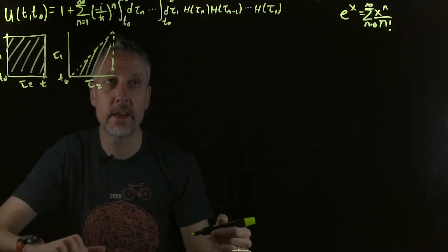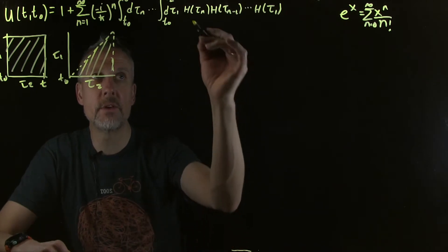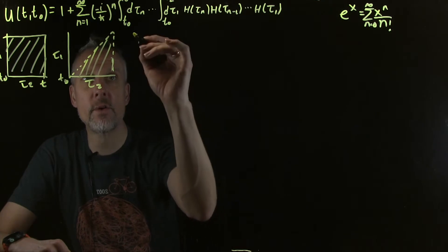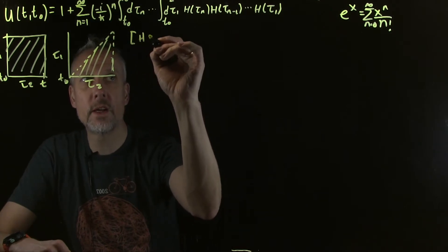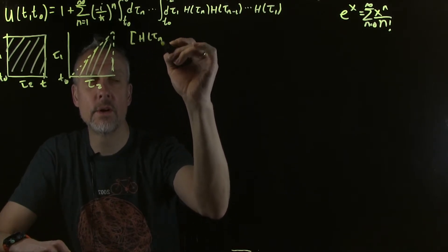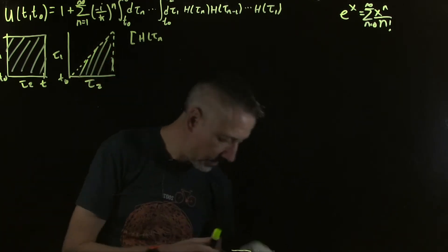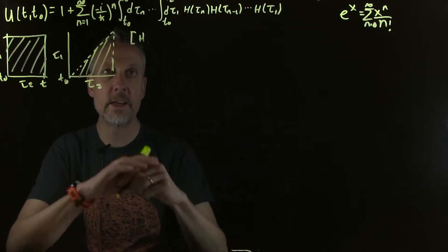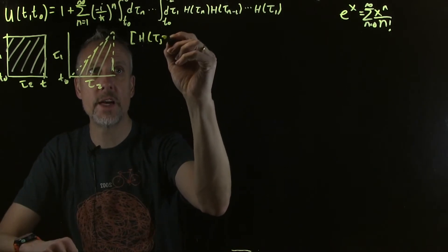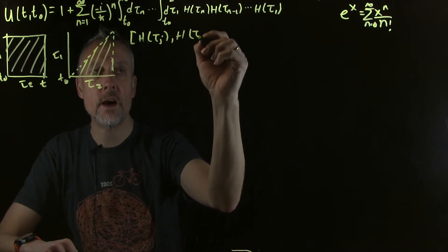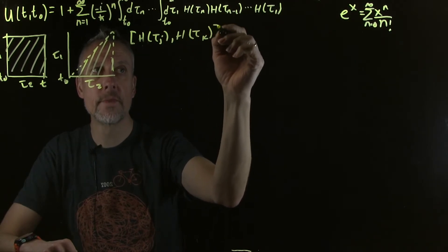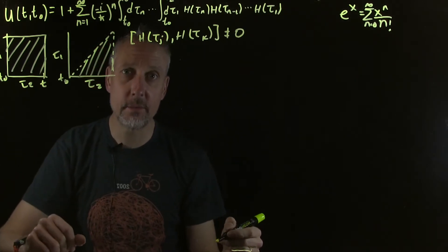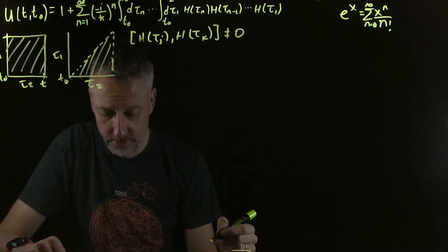The integral limits aren't all the same. The second thing is that we need to keep the ordering of the operators perfectly correct. Why? Because there's no guarantee that the Hamiltonian at any two times τⱼ commutes with the Hamiltonian at τₖ. This commutator is not necessarily equal to zero. Therefore the ordering of the operators matters — we can't change their ordering since they don't commute.